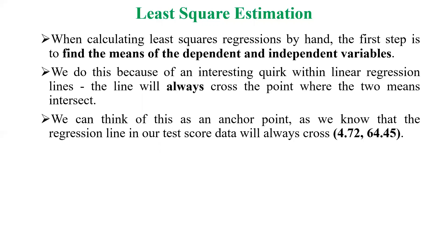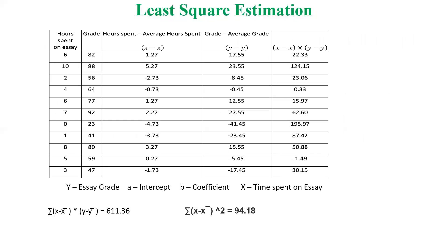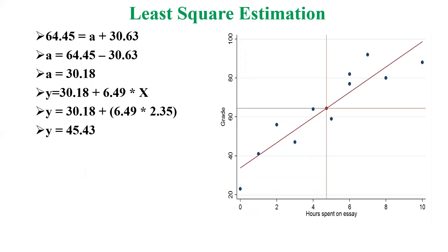An interesting property of linear regression is that the regression line always passes through the point where the means of x and y intersect — this is the anchor point. We observe this in test score data with hours spent on essay and corresponding grades. We calculate (x − x̄), (y − ȳ), their product (x − x̄)(y − ȳ), and (x − x̄)² to fill the table. In this example, the denominator is 94.18 and the numerator is 611.36.